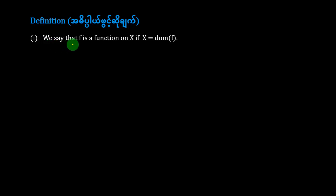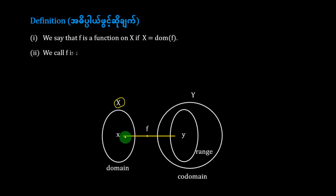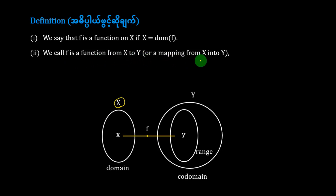In the definition, we will say that f is a function on h if h is equal to the domain of f. Therefore, h is a function on h and h is a function on h. If f is equal to h and h is a function on h, then h is a function on h.